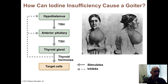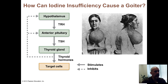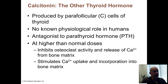Iodine deficiency goiters are no longer a problem in the United States, largely because iodized salt is mandated and widely available, and salt used as an ingredient in grocery store food items is almost always iodized. However, in parts of the world where there isn't much iodine in the soil — meaning it's not taken up into vegetables and fruits — iodine insufficiency problems still exist.